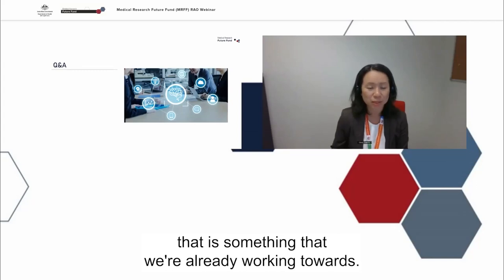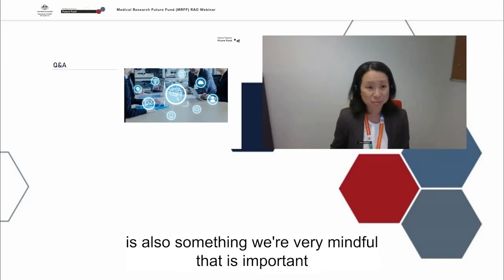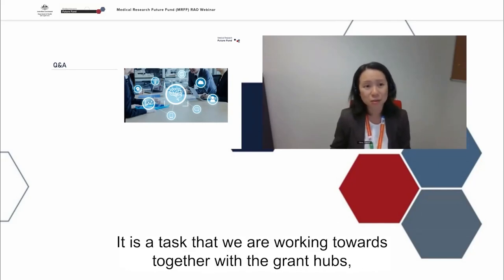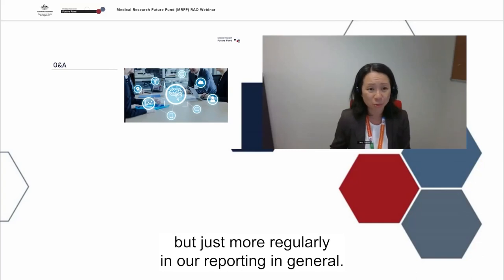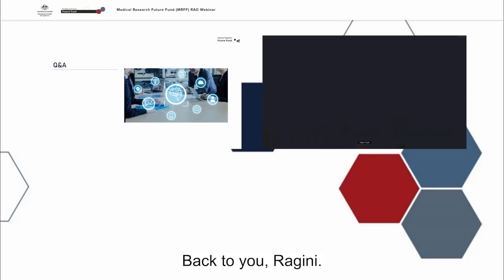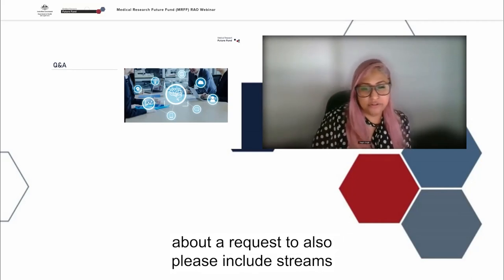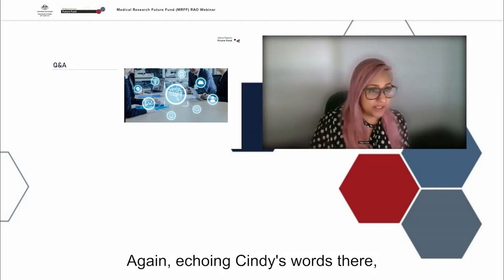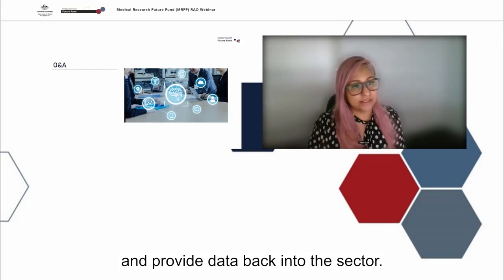In terms of outcomes, scores and funding success rates — this is something we're very mindful is important for visibility and transparency. The MRFF runs across a large range of grant opportunities, so this is a task we are working towards together with the grant hubs — both NHMRC and Business Grants Hub — to be able to provide these scores more regularly in our reporting in general. There's also a request to include streams when announcing applications or including information on the website. We definitely take all of this feedback on board as we continually aim to improve the way in which we release outcomes and provide data back into the sector.